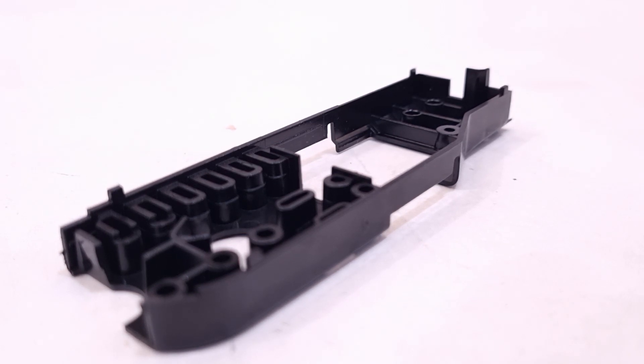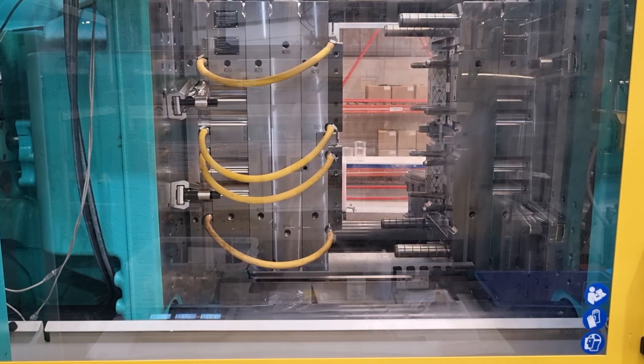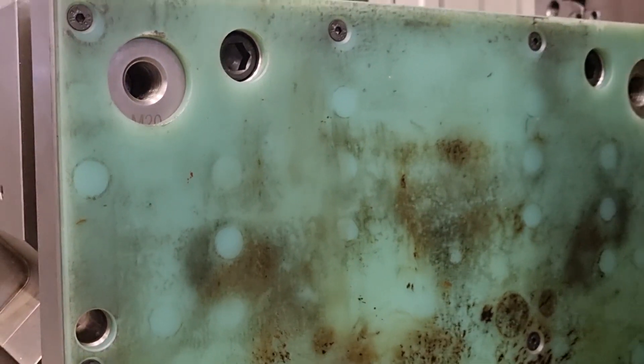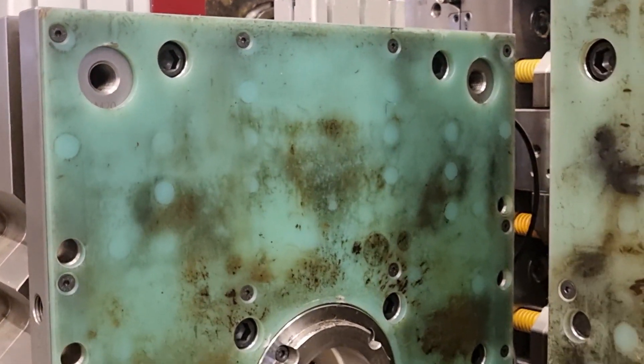There are several main components of mold tools that allow them to work as intended and keep them running for the longest time possible. These include the moving half and fixed half backplates. These allow the mold tool to be attached to the machine.